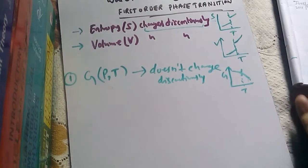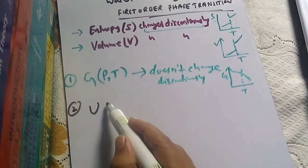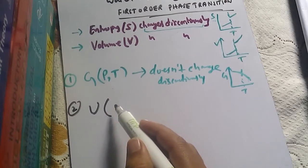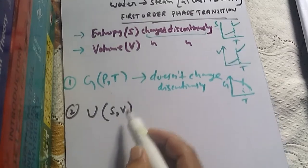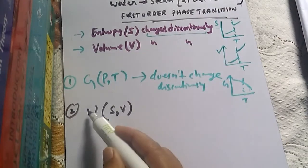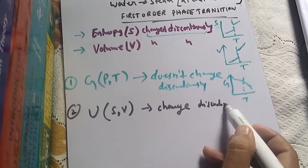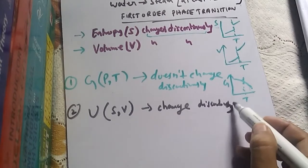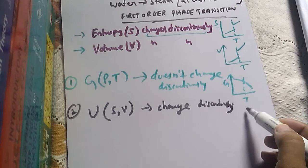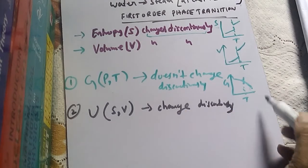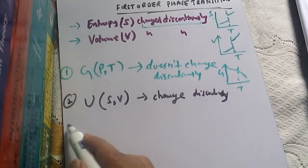The second option is internal energy. Internal energy U is a function of entropy S and volume V. Since entropy changes discontinuously, internal energy will also change discontinuously. This means if we draw a graph of U versus temperature, the graph will show a discontinuous change.